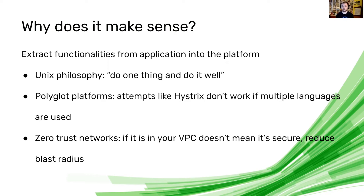The way Istio works is that you have a control plane and a data plane. The data plane is where your applications run, and you have Envoy proxy — a very performant proxy written in C++ — as a sidecar to your application. Every network request goes through Envoy to your application, and traffic going out also goes through Envoy. In this implementation you want something very performant so it doesn't impact the latency or throughput of your application.